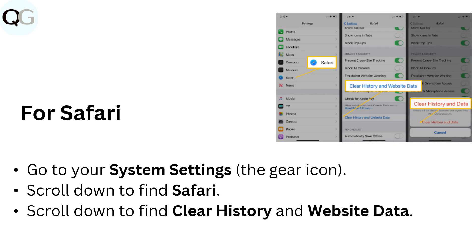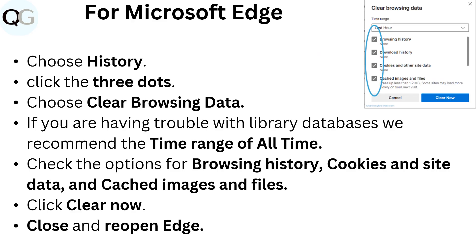For Safari, go to your system settings — the gear icon. Scroll down to find Safari, then scroll down to find clear history and website data.